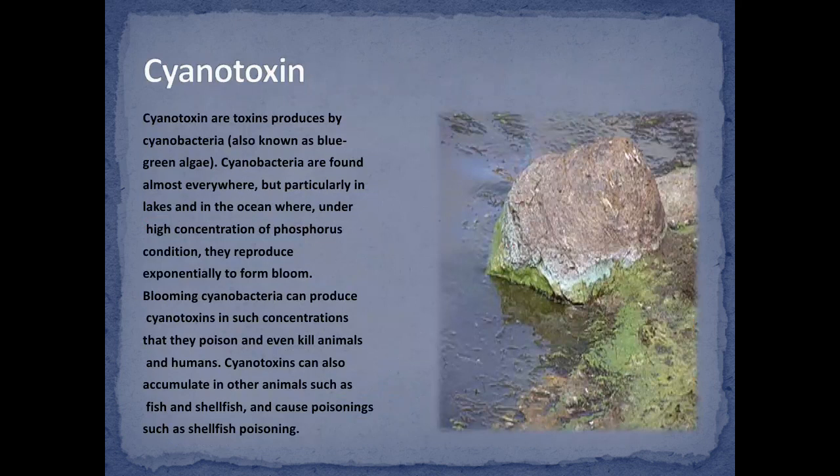Cyanotoxins: cyanotoxins are toxins produced by cyanobacteria, also known as blue-green algae. Cyanobacteria are found almost everywhere, but particularly in lakes and in the oceans where, under high concentrations of phosphorus, they reproduce exponentially to form blooms. Blooming cyanobacteria can produce cyanotoxins in such concentrations that they poison and even kill animals and humans. Cyanotoxins can also accumulate in other animals such as fish and shellfish, causing poisoning.